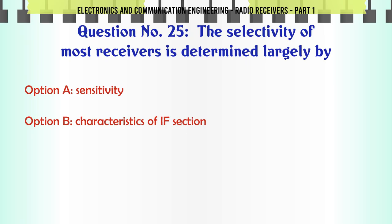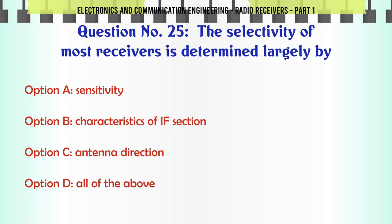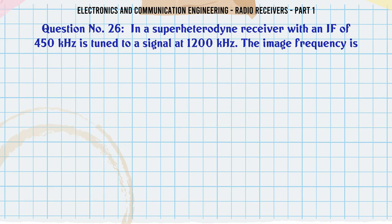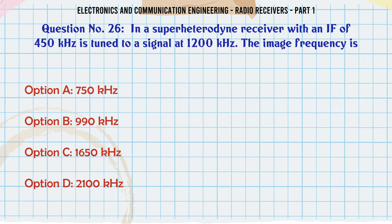The selectivity of most receivers is determined largely by: A. Sensitivity. B. Characteristics of IF section. C. Antenna direction. D. All of the above. The correct answer is characteristics of IF section.